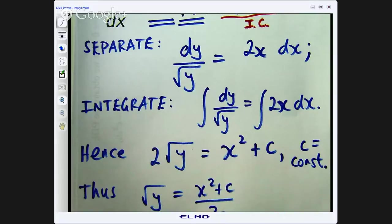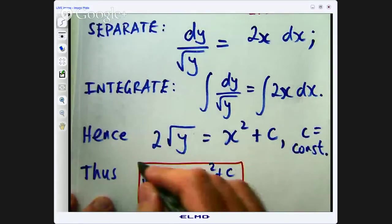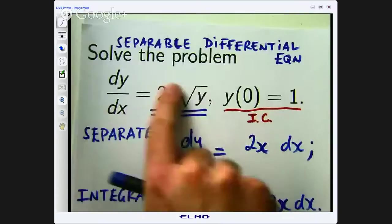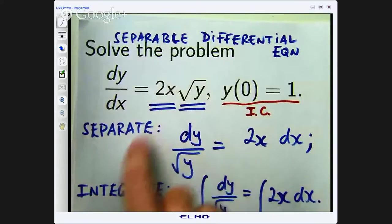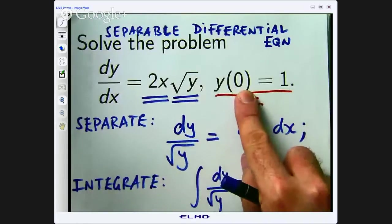So this now is some sort of general solution because it works for every constant c. I am not going to do anything else to it. What I would like to get now is the value of c. Now I have used this heavily. I separated the variables and integrated but I have not used the initial condition yet.